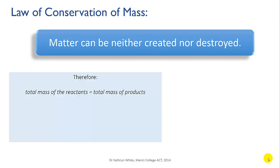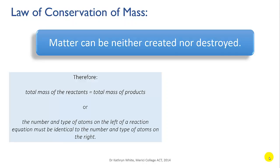Another way of looking at this — a way that helps us in balancing equations — is that the number and type of atoms in the reactants, which are written on the left of an equation, must be identical to the number and type of atoms in the products, which are written on the right of the equation.